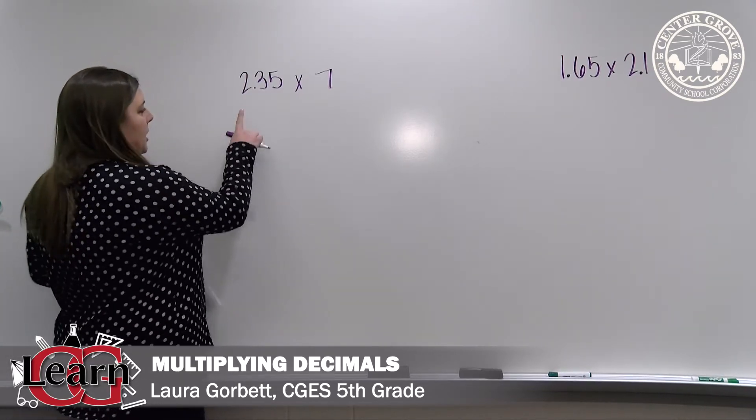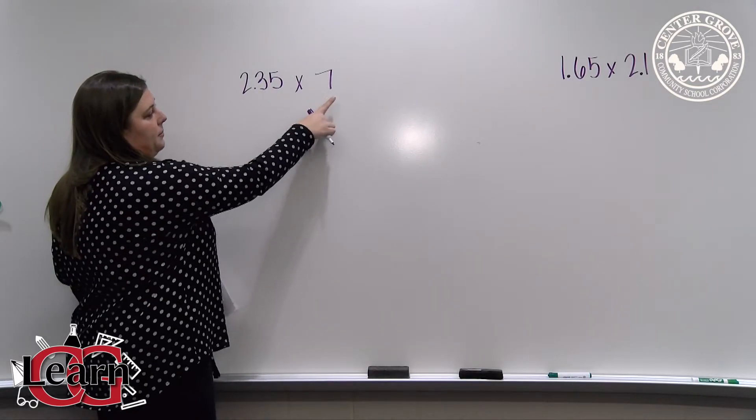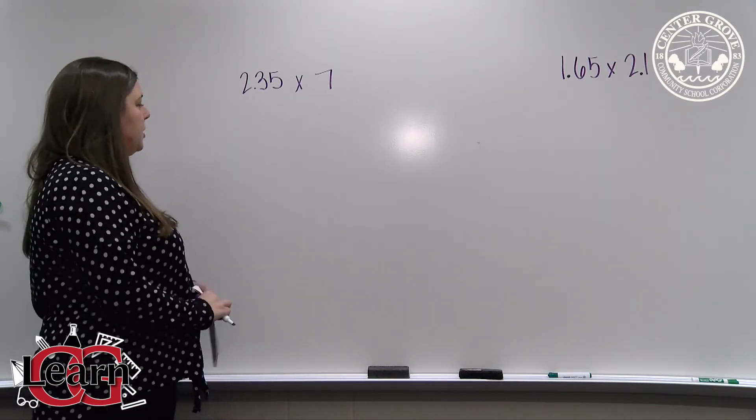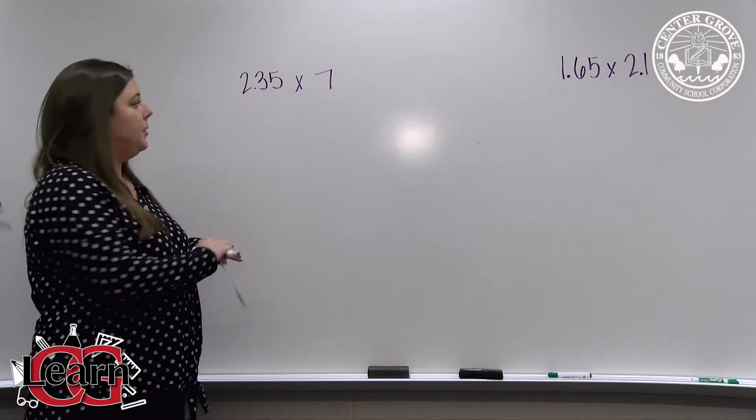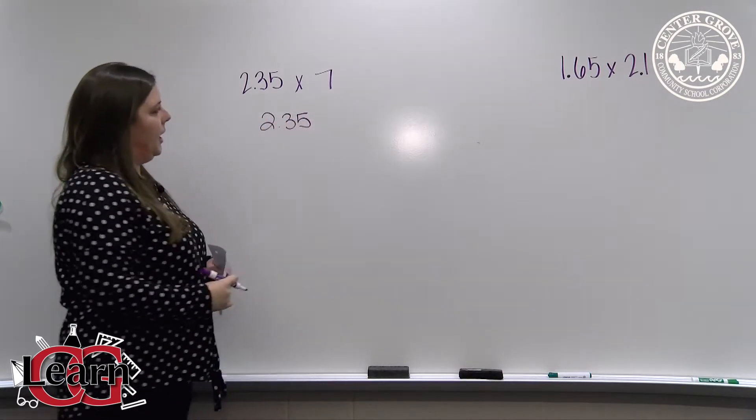The first example is 2 and 35 hundredths being multiplied by 7, so a decimal number being multiplied by a whole number. First I like to remind my students to put the factor with the most digits on top. So in this example, 2 and 35 hundredths will be written on top.